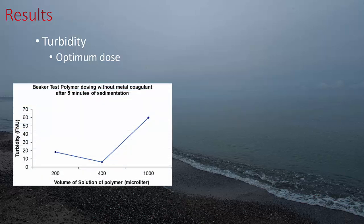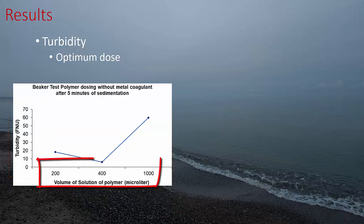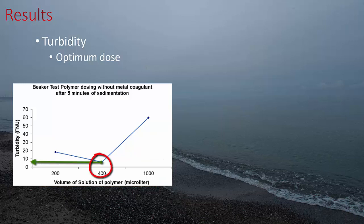You try to find an optimum dose with the lowest turbidity. In this case I did a test where I looked at polymer dosing without any metal coagulant — just polymer. On the y-axis is the turbidity after sedimentation; on the x-axis is the polymer dose. To get the lowest turbidity the optimum dose here was 400 microliters. But 400 microliters might be too much, so if the turbidity at 200 microliters is acceptable, you might be able to reduce the dose to 200.